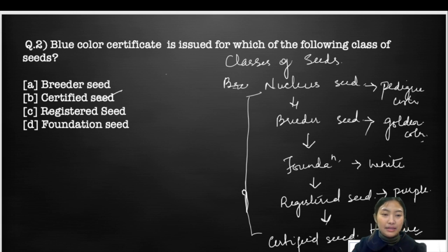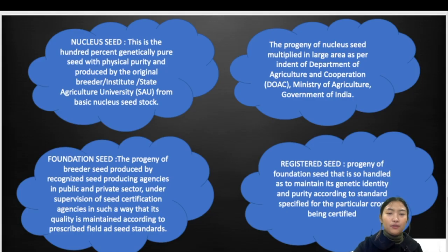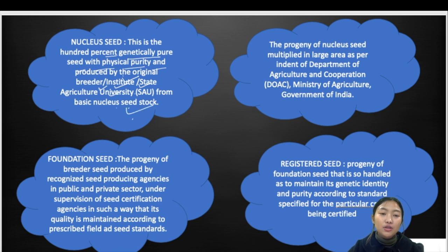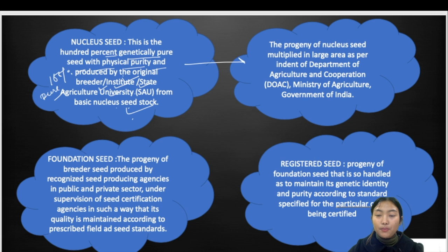Let's go into detail about these classes. The nucleus seed is 100% genetically pure with physical purity, and is produced by the original breeder, an institute, or a state agricultural university from the basic nuclear stock. It is 100% genetically and physically pure. The progeny of nucleus seed is known as the breeder seed.